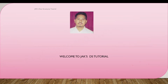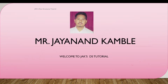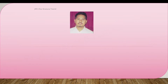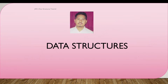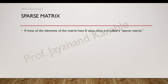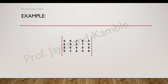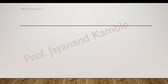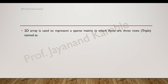Welcome to Jack's tutorial. In the last tutorial we saw what a sparse matrix is and its triple data structure representation. A sparse matrix is a matrix in which most of the elements are zeros, or we have very few nonzero elements. In the example, we had a 4 by 5 matrix — total 20 elements — out of which only six elements are nonzero, which is why we call it a sparse matrix.